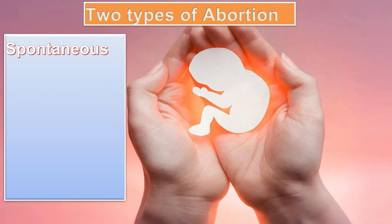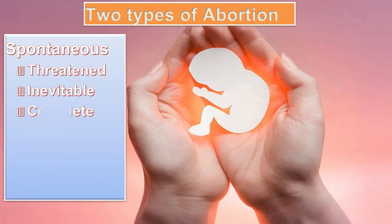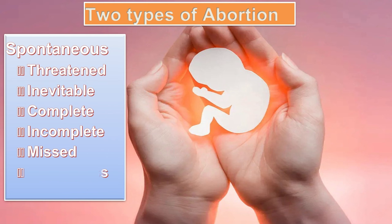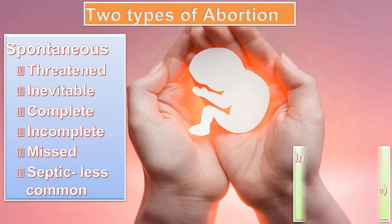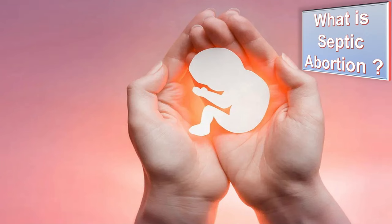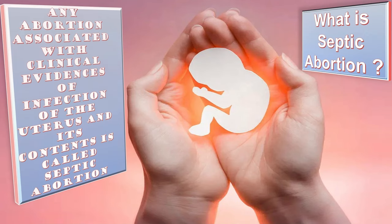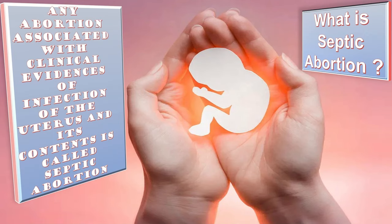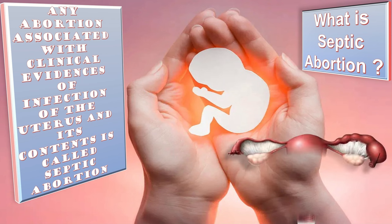Overall there are two types of abortion. Spontaneous abortion includes threatened, inevitable, complete, incomplete, missed, or septic, which is less common. Induced abortion can be legal or illegal — the illegal type is unsafe, and septic abortion is common with it. Any abortion associated with clinical evidence of infection of the uterus and its contents is called septic abortion.